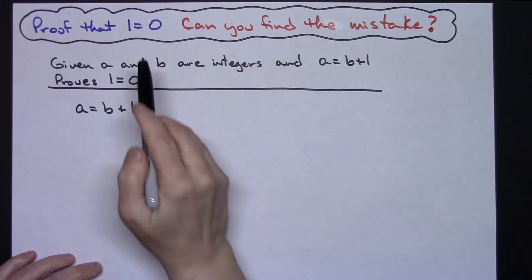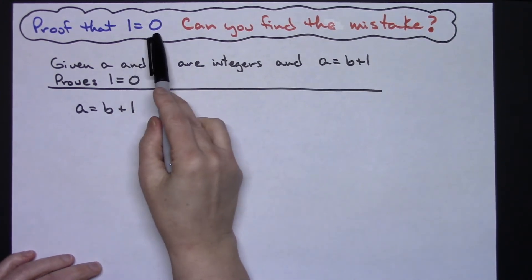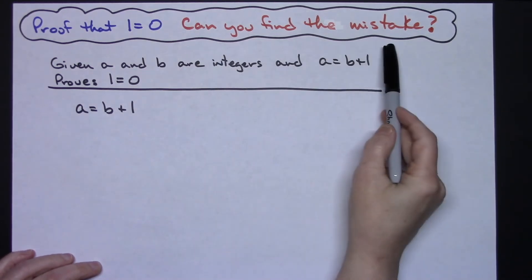In this video I'm going to take a look at the proof 1 equals 0. My question to you is can you find the mistake?